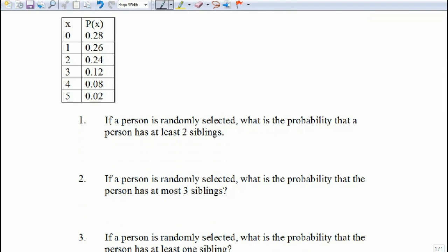Let's look at the first question. If a person is randomly selected, what is the probability that a person has at least two siblings? Well, let's talk about the definition of at least. At least means that number or more, so it's that value or more.